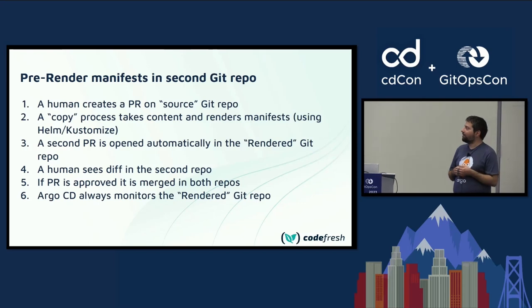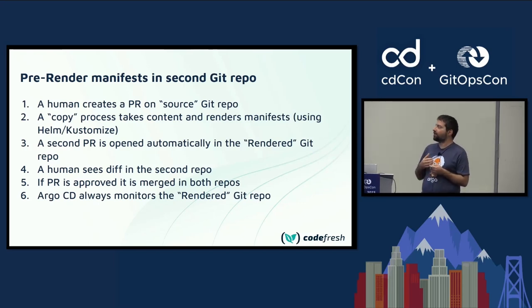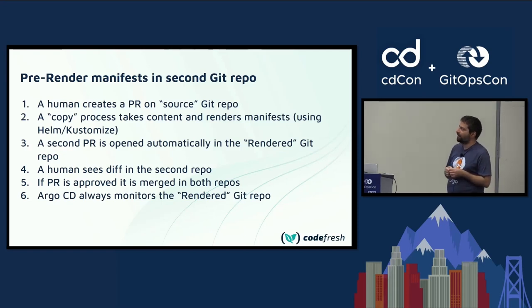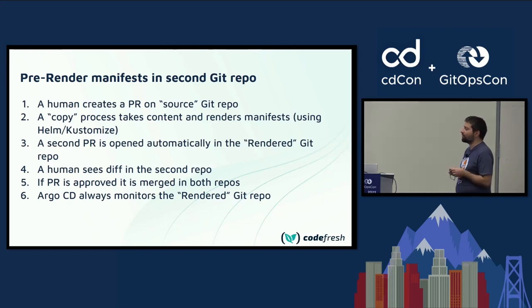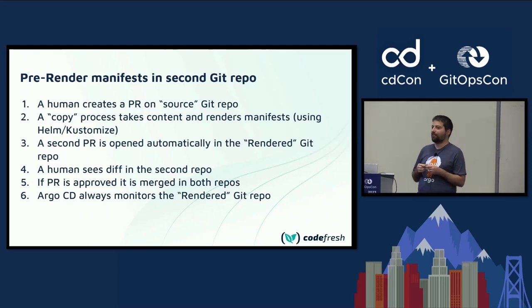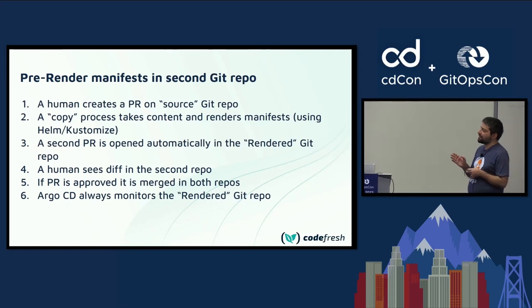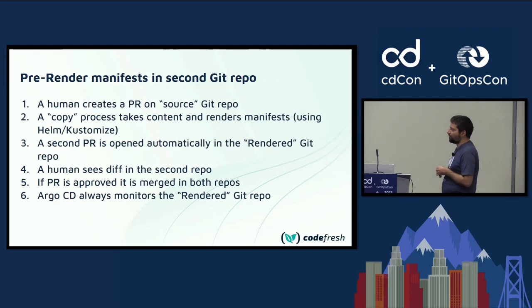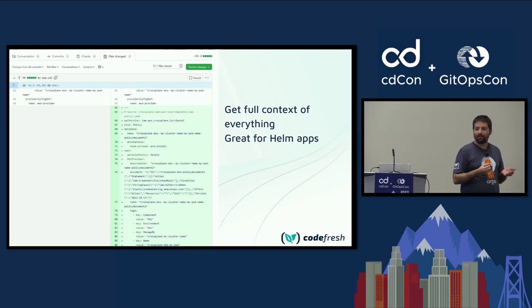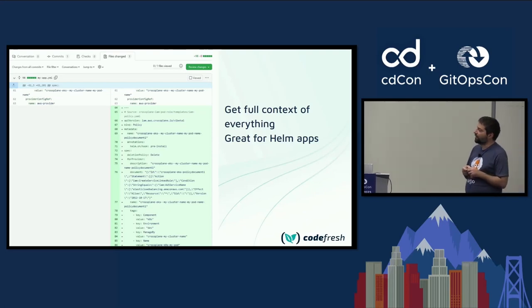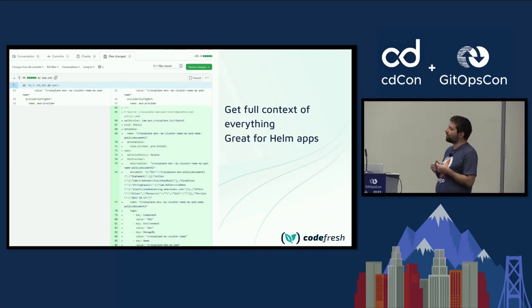This might look simple in theory, but in practice it needs some other stuff. As a human, I should only interact with the first Git repo, so I'm going to create a pull request there. But the diff I want to see is on the final rendered manifests, so I also need a second pull request on the other Git repository — you need your CI system to create this for you. And once I approve the pull request on the first Git repo, I also need the pull request on the other Git repo to be approved or rejected. This needs some setup, and you need to account for all the scenarios and workflows. But the end result is great: here I have a diff, and because I'm doing it on the second Git repository with final rendered manifests, I actually see a manifest and not a Helm template. As a user, this is very easy — I don't need to run Helm template in my mind.